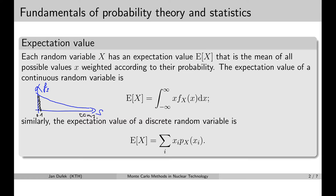So let's calculate the expectation value for our example. We are going to integrate the random variable — that is the distance s — multiplied by the probability density function. In our case, that is the product of the total macroscopic cross-section and the exponential function with the exponent minus sigma_t times s. We are going to integrate this over the distance from 0 to infinity.